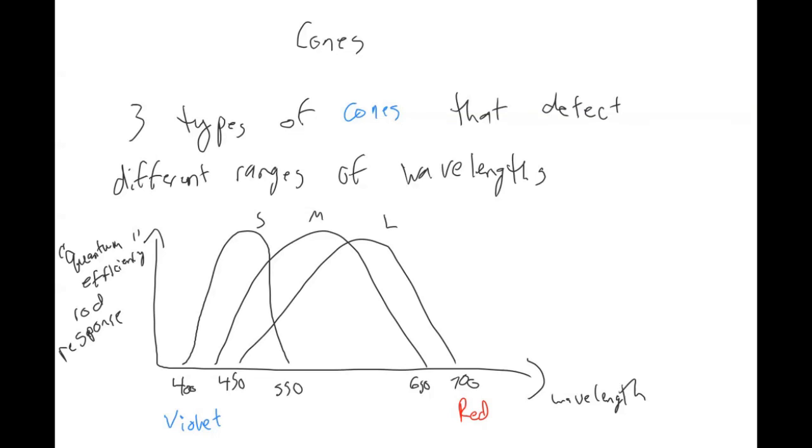Then anywhere in the middle of that, like green, for example, you're getting more of an even mixture of all of the different cones reacting. And so your brain interprets that as a green light, because green is somewhere in the middle of this spectrum.